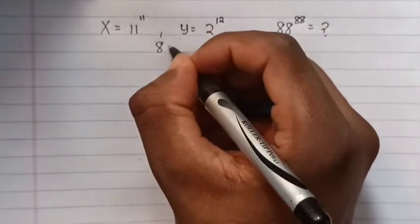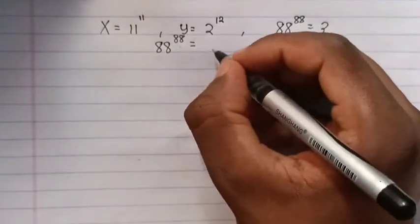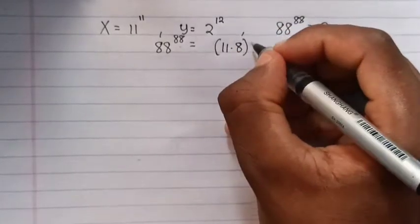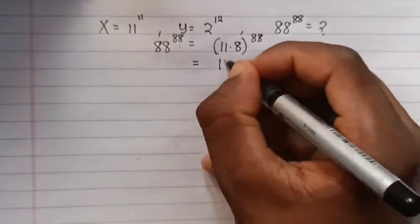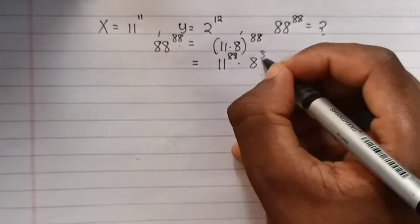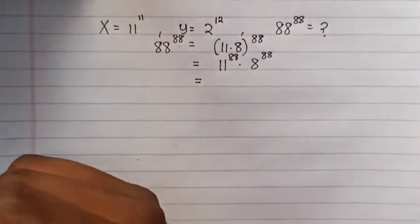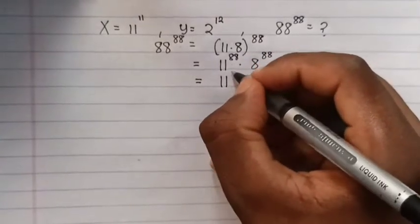88 to the power of 88 is the same as 11 times 8, to the power of 88, right? Then this one is the same as 11 to the power of 88 times 8 to the power of 88.